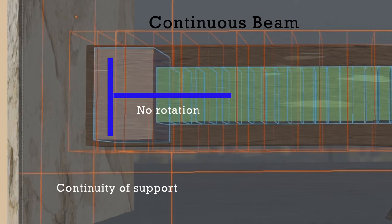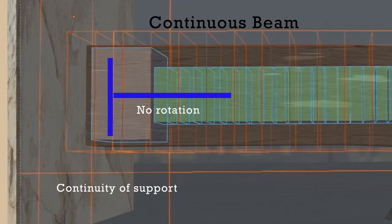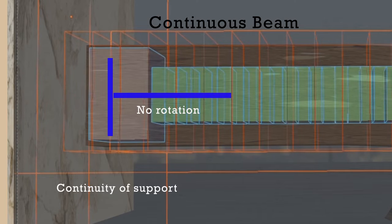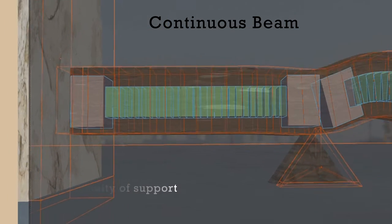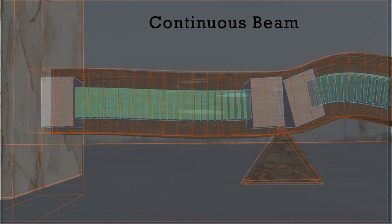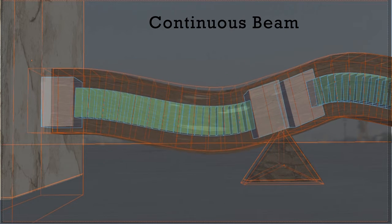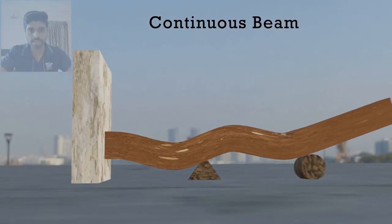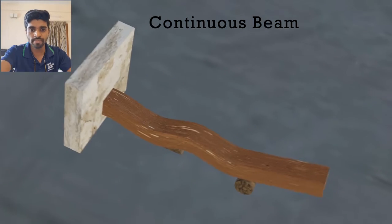The angle is maintained. So after applying this rule, we have the deflected shape of the first beam. Hence this is the overall deflected shape of the continuous beam.